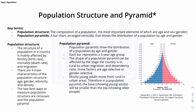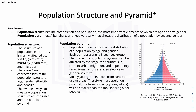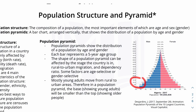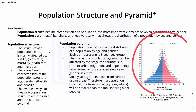Here are two key terms you need to know: population structure and population pyramid. They are quite similar, but basically a population pyramid is like a bar chart arranged vertically that shows the distribution of a population by age and gender. As you can see, it's split by age on the vertical column showing different age groups, and split by gender with male and female. Each bar represents a five-year age group.